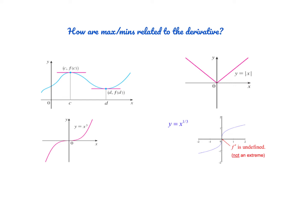Now let's talk about how maxes and mins are related to the derivative. At a relative maximum or minimum, our derivative equals zero because the graph is flattening out — the slope is zero. So when looking for maxes and minimums, it might occur when the derivative is equal to zero. However, consider the absolute value graph: this is an absolute minimum, but the derivative is actually undefined at that point because it comes to a sharp point. So a max or min can also occur when the derivative is undefined.